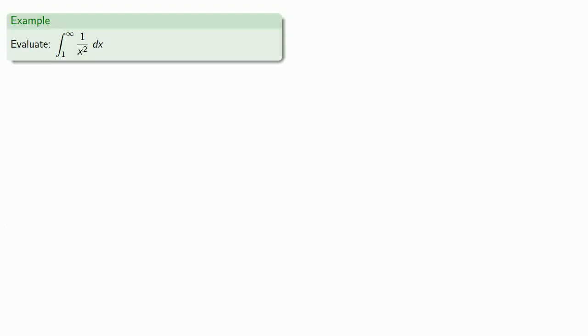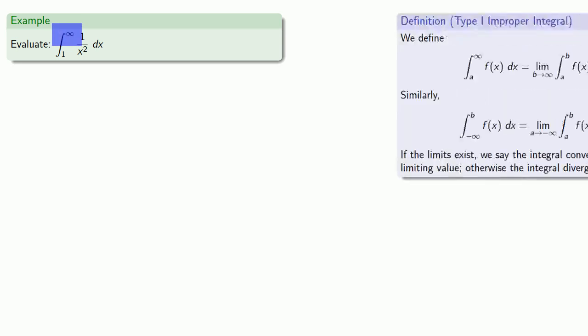For example, suppose we want to evaluate the integral from 1 to infinity of 1 over x². So since our upper limit is going to infinity, this is a type 1 improper integral, not that we really care. What we do care about is that if it has a value, that value is going to be defined as the limit as b goes to infinity of the definite integral from 1 to b of 1 over x² dx.